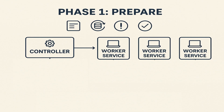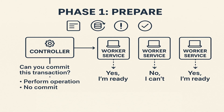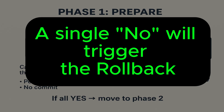In our system we will have multiple worker services and one controller service, also known as the coordinator. The coordinator sends a message to all participating services asking: can you commit this transaction? Each service then tries to perform the operation locally but doesn't actually commit yet. It replies either yes, I am ready, or no, I cannot commit. If any service says no in the prepare phase, the coordinator sends a rollback signal and every service discards their local changes.